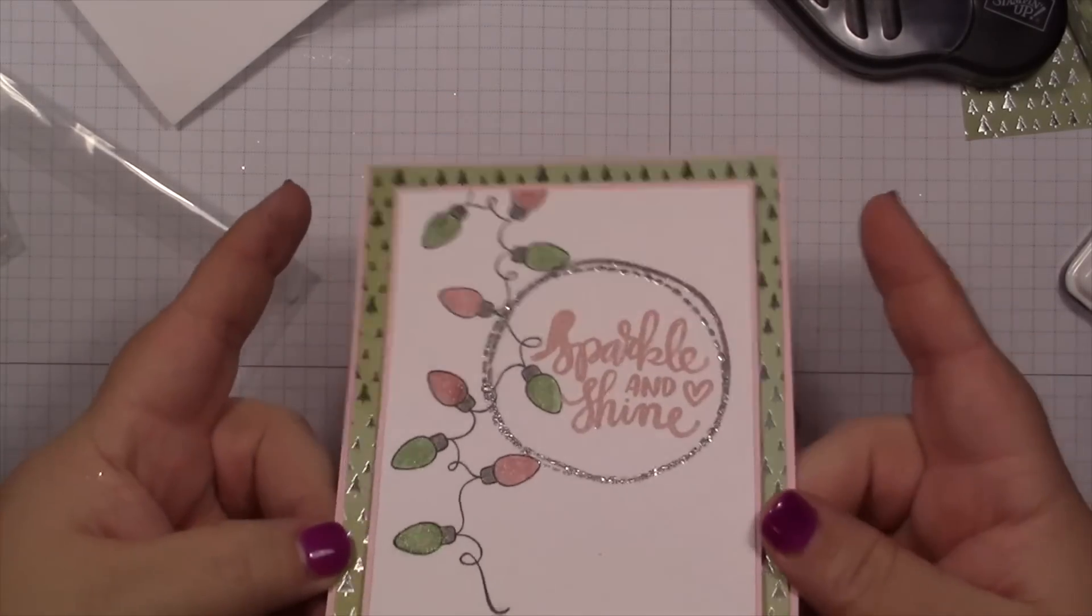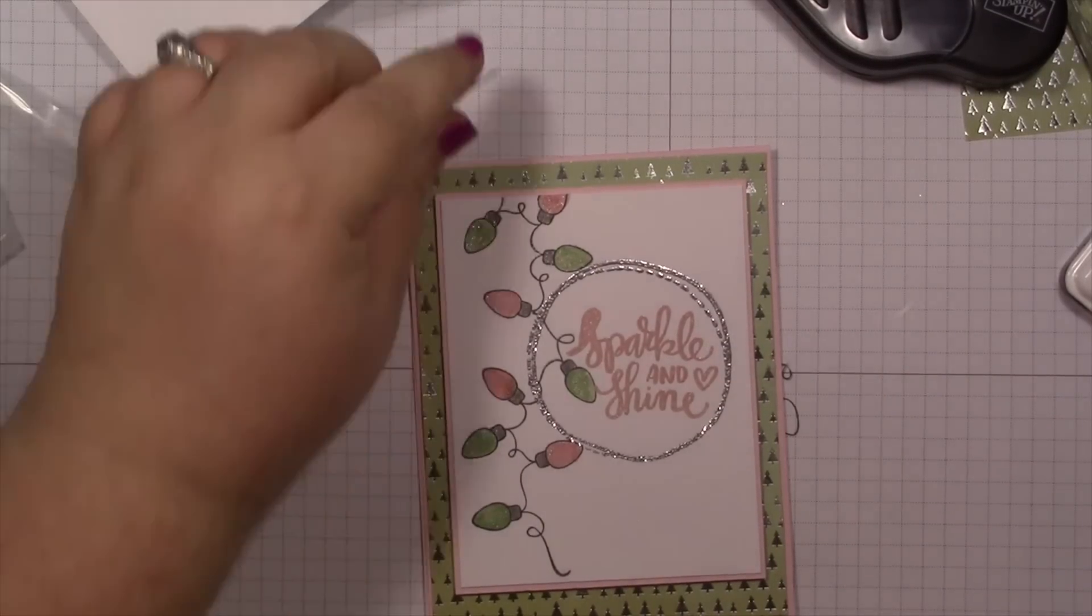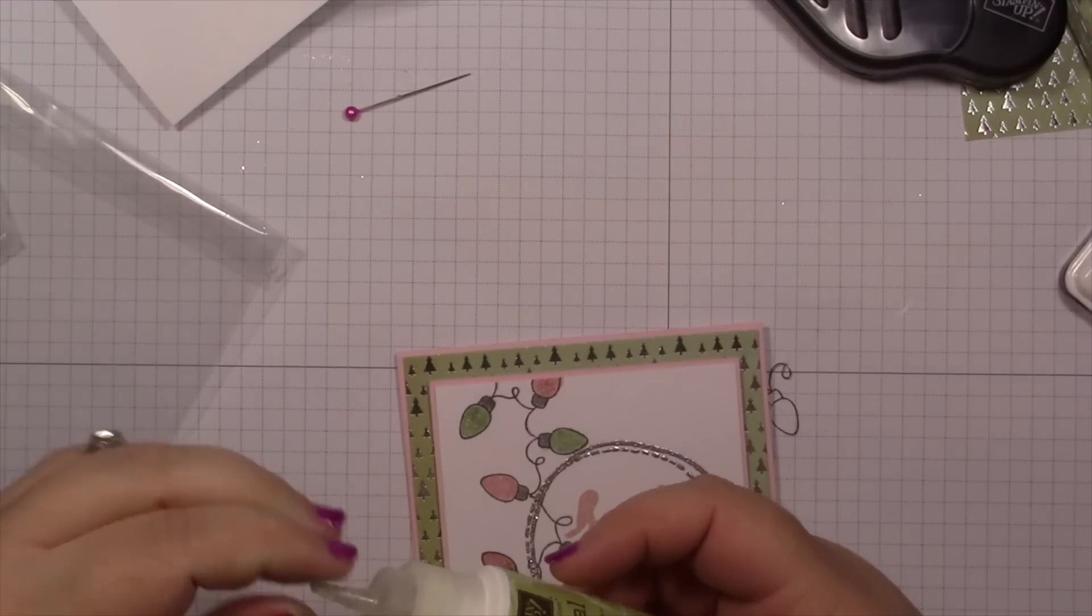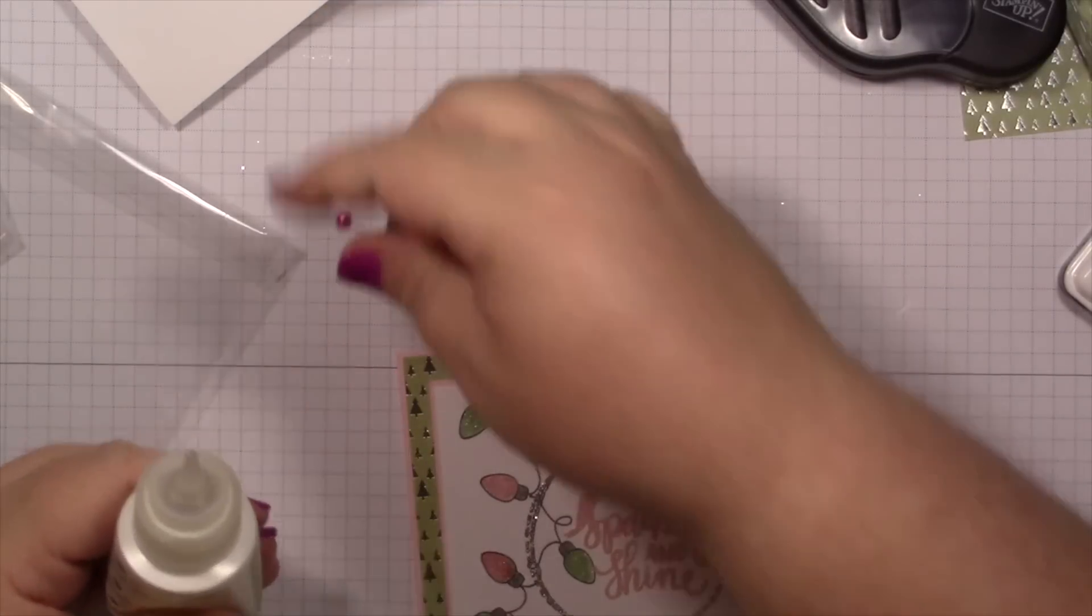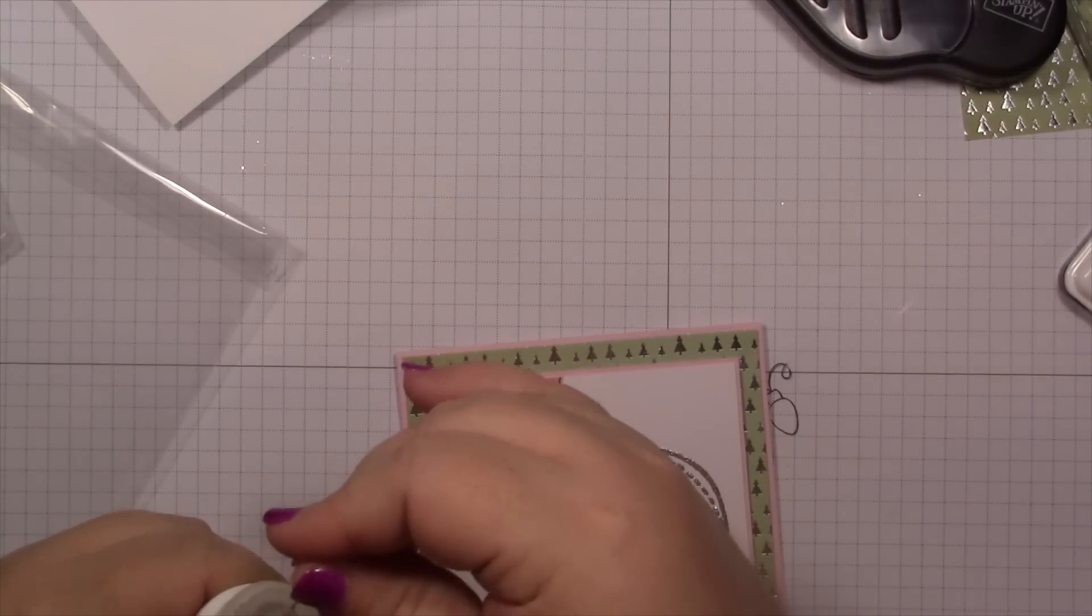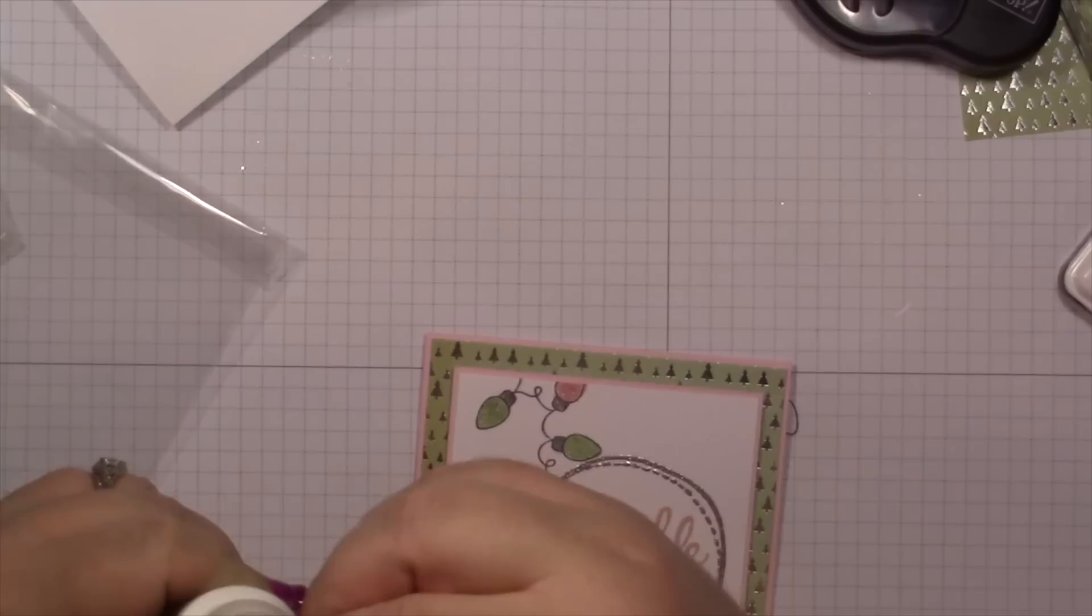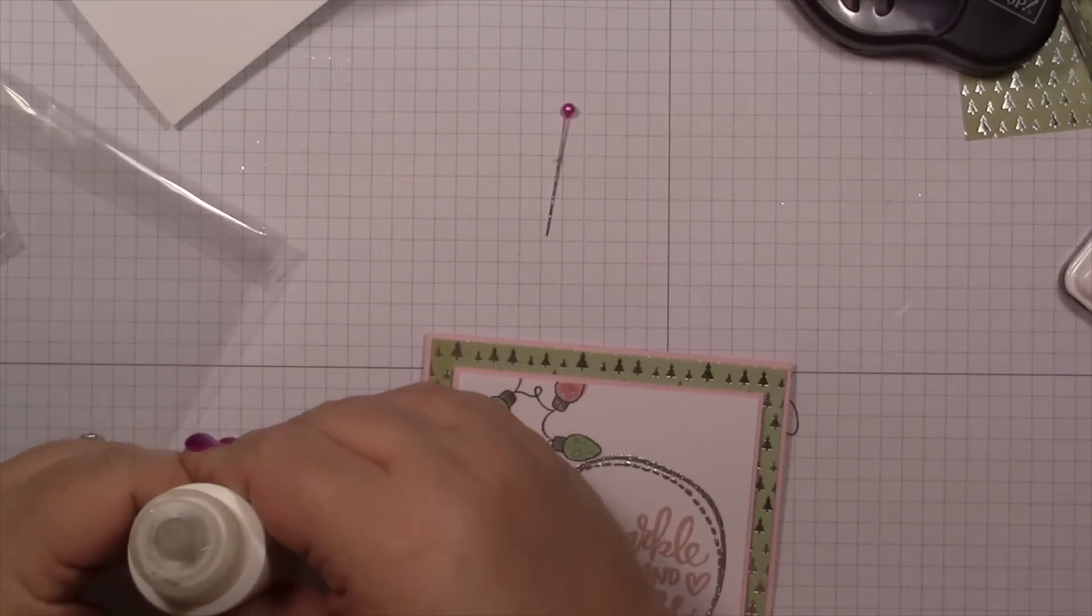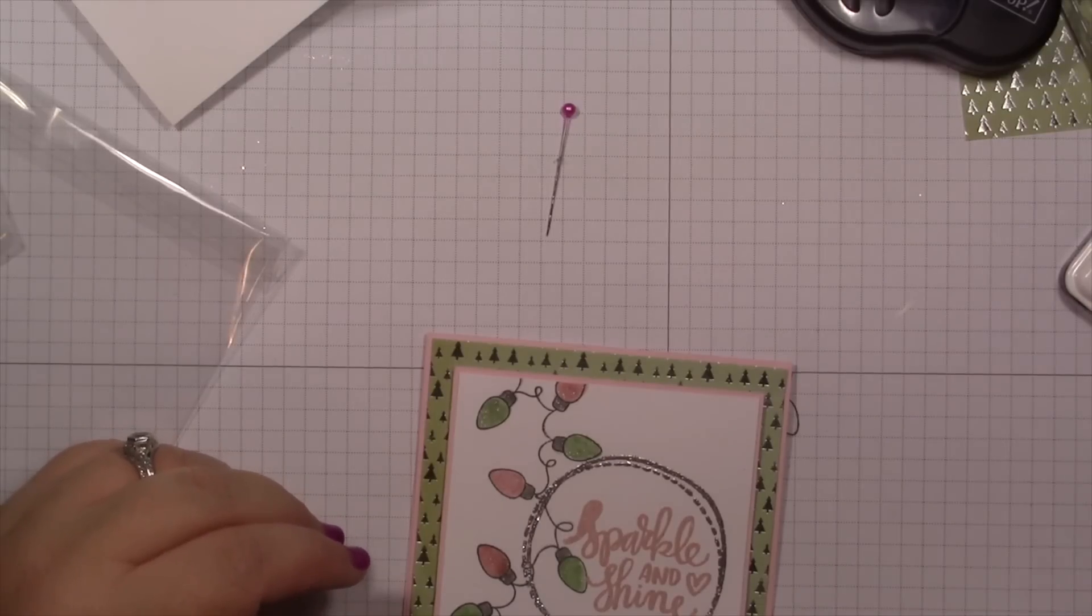There, I like it. All that shimmer and sparkle and shine. Let's add some crystal effects to the lights so they look more like light bulbs. Each time I think I've done this so it won't make a mess, I've lied to myself. And crystal effects is Stampin' Up's version of glossy accents. So I've started using it instead of glossy accents because with my demonstrator discount it works out to be a little bit cheaper.